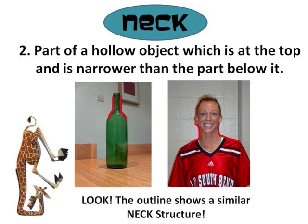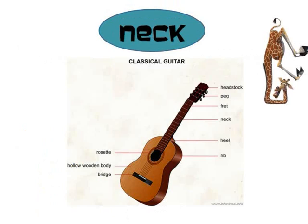Look at the outline that I have highlighted for you. I know some of you musicians out there also know the neck of a guitar. Look at the arrow pointing — that is the neck of a guitar. Now my big question is: how are my neck, the neck of a bottle, and the neck of a guitar polysemous?